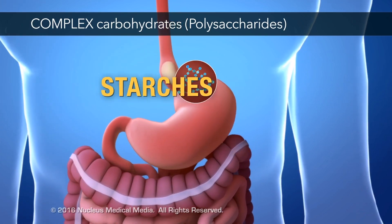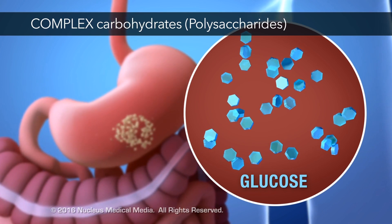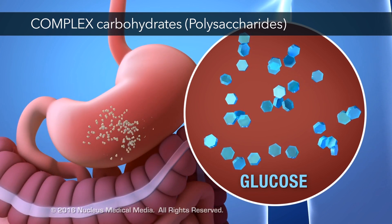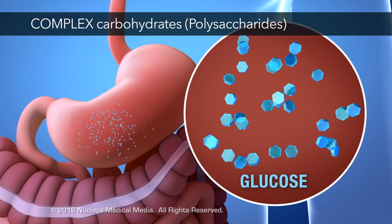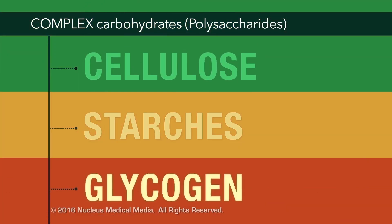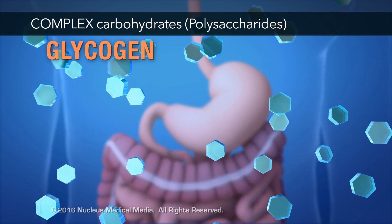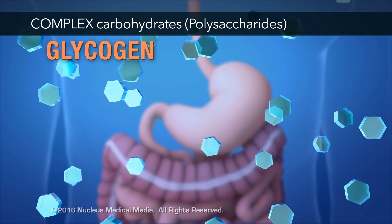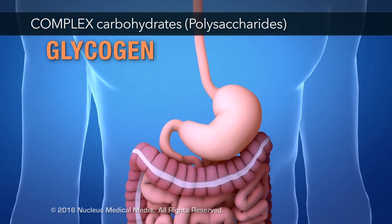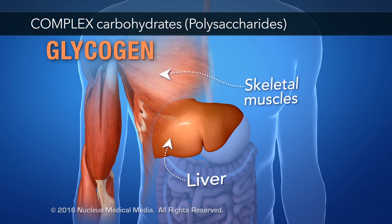The body's digestive system breaks down starches into glucose molecules to fuel the activities of all of our cells. Extra glucose molecules that the body doesn't immediately need for energy are stored as polysaccharides called glycogen, either in the liver or in skeletal muscles.